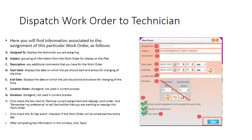H. Click to check the box next to Remove Current Assignment and Reassign Work Order and Remember My Preference to tell ServiceMax that you are wanting to reassign this work order. Though you have not assigned this work order previously, it is currently assigned to your service team and must be unassigned before it can be assigned to a specific technician. I. Click to check All Day Event if the work order should take the entire day. J. After completing the information in this window, click Save.